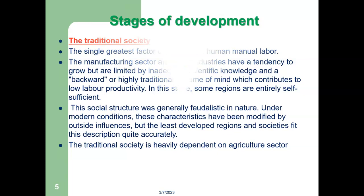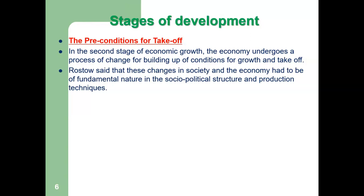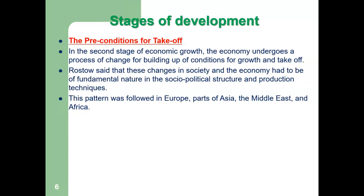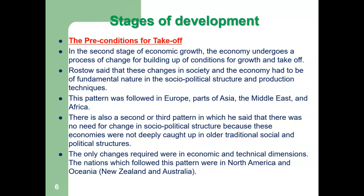The second stage of development is the preconditions for take-off. In this stage, the economy undergoes a process of change for building up conditions for growth and take-off. Rostow claimed that these changes in society and the economy had to be of a fundamental nature in the socio-political structure and production techniques. This pattern was followed in Europe, parts of Asia, the Middle East, and Africa. There is also a second or third pattern in which he said that there was no need for change in socio-political structure, because these economies were not deeply caught up in older traditional social and political structures. The only changes required were in economic and technical dimensions. The nations which followed this pattern were in North America and Oceania — that is, New Zealand and Australia.